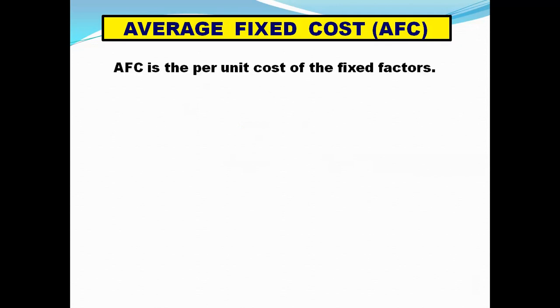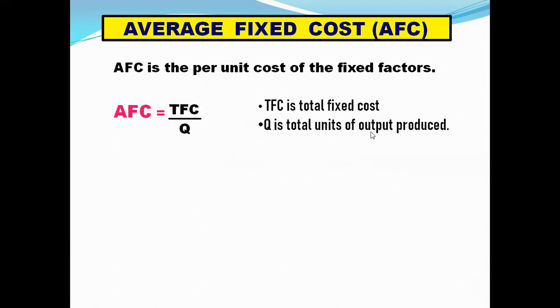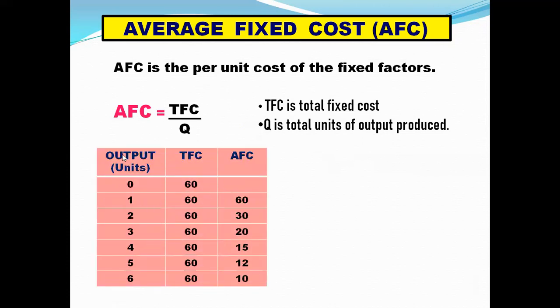Now we come to average fixed cost. TFC, that is total fixed cost, is the total fixed cost of the fixed factors of production. Average fixed cost is the per unit cost of the fixed factors of production. AFC is given by TFC divided by Q, where TFC is total fixed cost and Q is the total units of output produced. With TFC fixed at 60: AFC = 60/1 = 60, 60/2 = 30, 60/3 = 20, 60/4 = 15, 60/5 = 12.